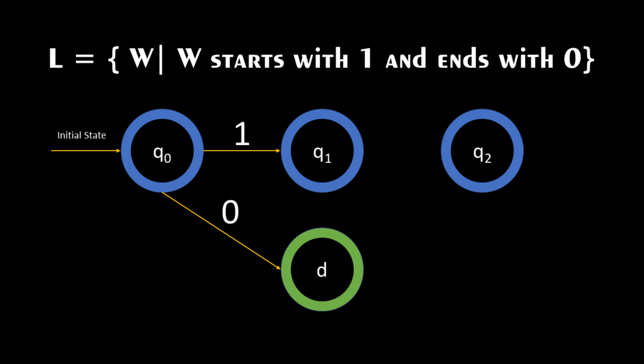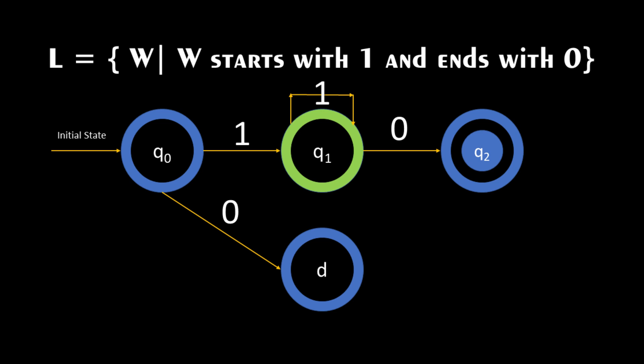Next we add transitions for Q1 for both inputs. When the input is 0, Q1 transitions to Q2 since W should end with 0, and we set Q2 as the final state. If the input is 1, we return to Q1 itself.